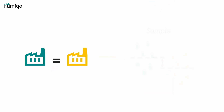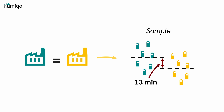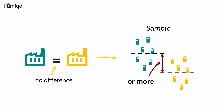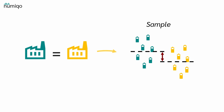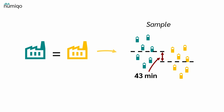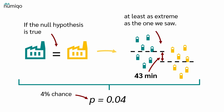And that is exactly what the p-value tells us. The p-value tells us how likely it is to draw samples that differ as much as observed or more, if there is truly no difference. Let's say we calculate the p-value for an observed difference of 43 minutes and obtain a p-value of 0.04. What does a p-value of 0.04 mean? If the null hypothesis is true, there is a 4% chance of observing a result at least as extreme as the one we saw, purely by random sampling.